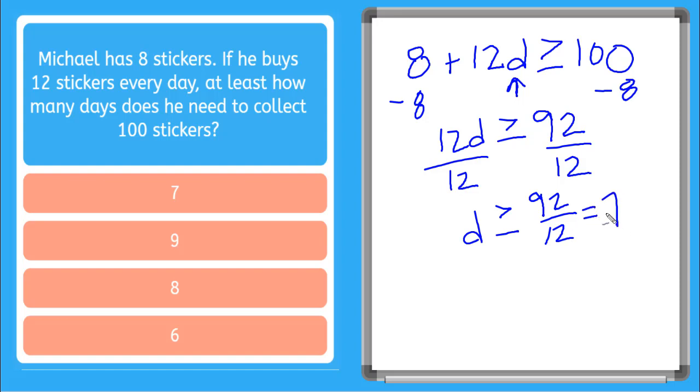But we need more than this. So D is going to have to be greater than or equal to 8 days. And there you are. Nice work. Let's try another one.